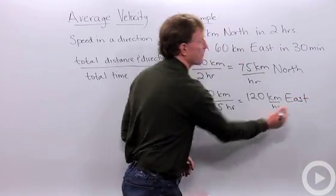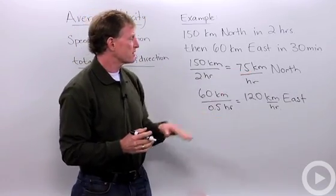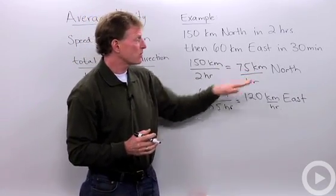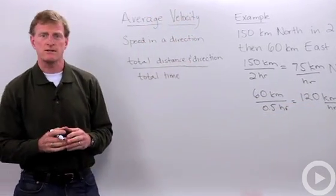which is a separate velocity than our initial velocity. So our answer here is we have 75 kilometers an hour north and then 120 kilometers an hour east. And that's how we calculate average velocities.